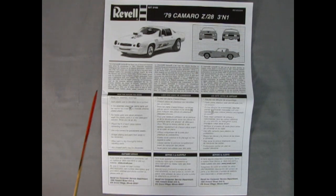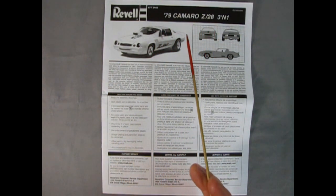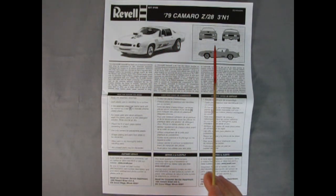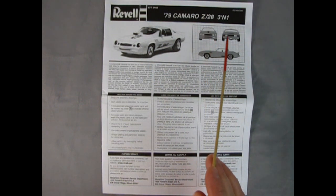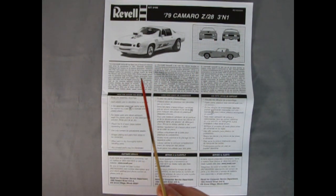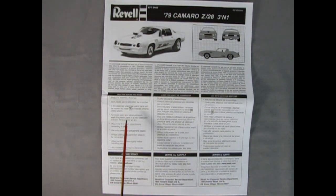Here is the instruction sheet for our Revell 1979 Camaro Z28 3-in-1 model kit. Here's the front three quarters of our street machine version as well as the side, front, and rear view of the stock version. And then we've got our history of the Camaro here in three different panels for the different languages. A box telling us all the things we need to build our model kit and the customer service number.